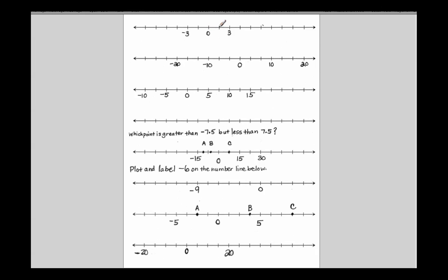From 0 to the first point, is it labeled? No. But I know that this has to be the length from 0 to 3 partitioned into two equal parts. So this would be 3 — that's the numerator — and it's partitioned into two equal parts. So each one of these equal-space points is worth 3 halves.